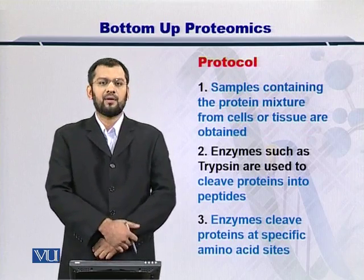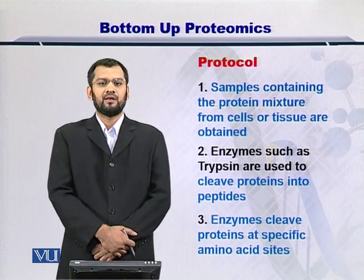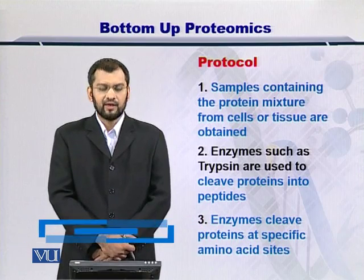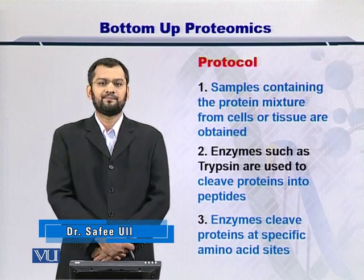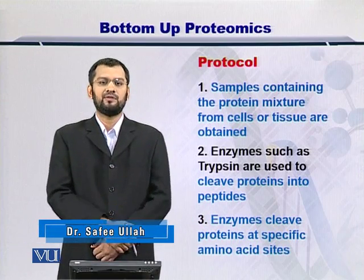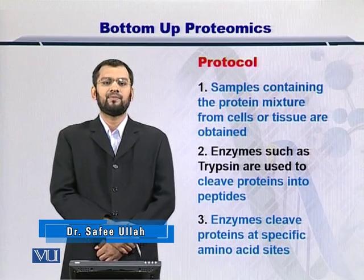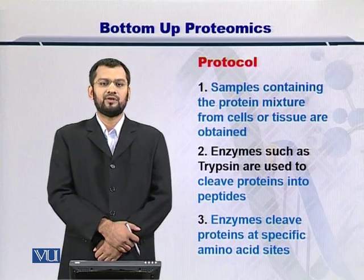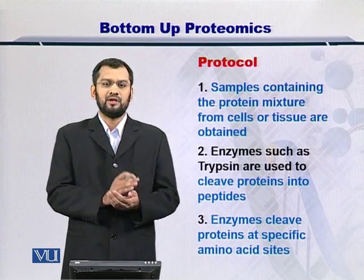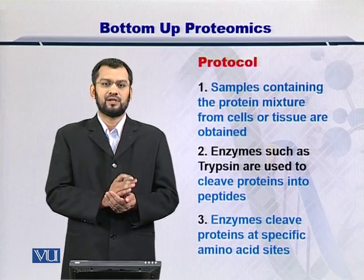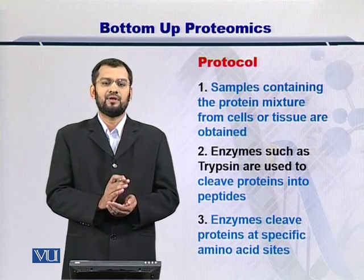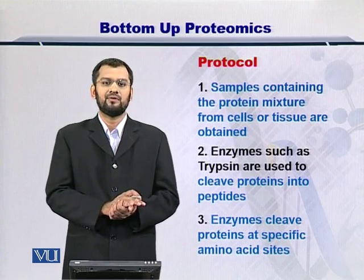To begin with the bottom-up proteomics protocol, the first thing that you have to do is take the sample which contains multiple proteins and separate them using a gel. Once you have separated the proteins on a gel, then you can take a protein and treat it with an enzyme which will cleave it at specific sites, and you will have several peptides resulting from the process.